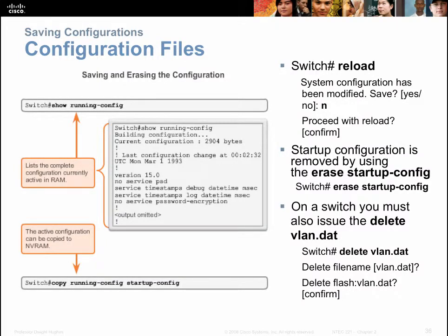Configuration files: everything you type into the router is stored in a file. We need to back that file up to flash so it's available if the power goes out. This is like typing a Word document — if you type something good and want to keep it, you need to save it. If you don't save and the computer power cycles, you'll lose everything. Once we type in our hostname, passwords, and other settings, we want to save that through the copy command.